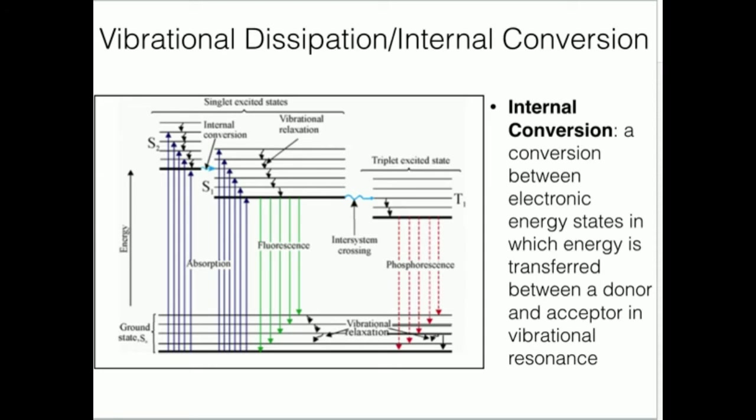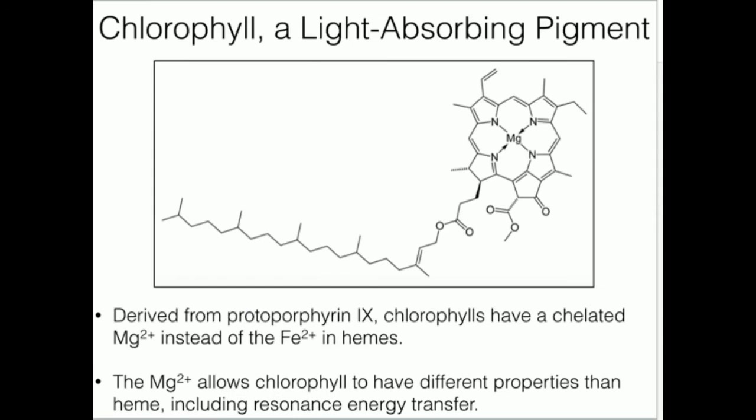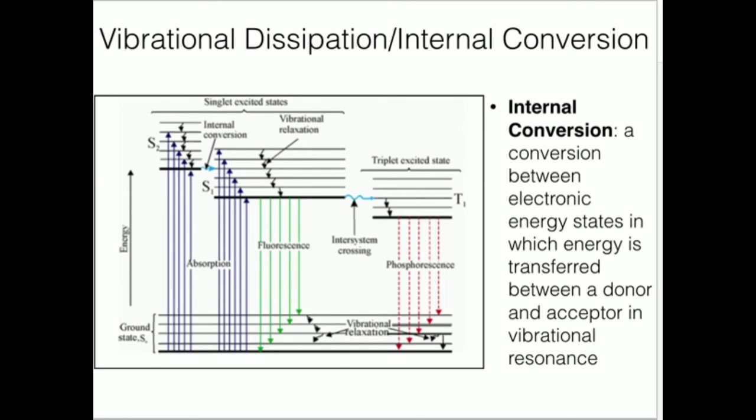There's a process I want to talk about called internal conversion. Knowing exactly what it is is really not important. What you should notice is we start out here at the bottom in some sort of ground state. UV light, particularly from the sun, strikes these light-absorbing pigments such as this, and that causes electrons to go up in energy. You see electrons can be up in energy up here.